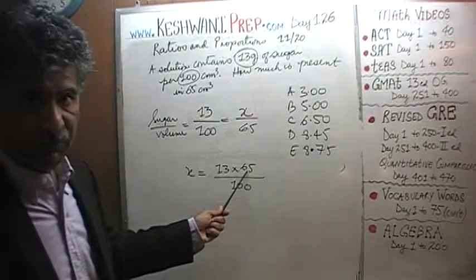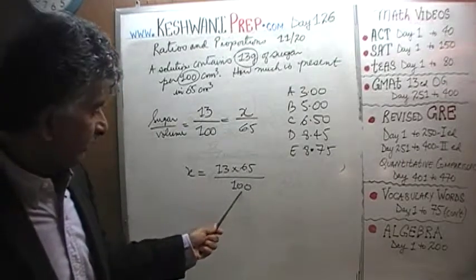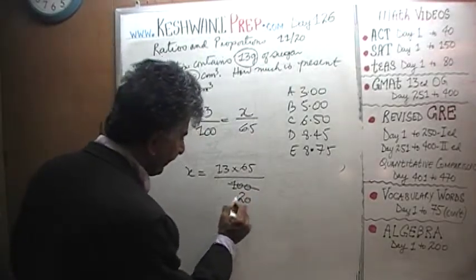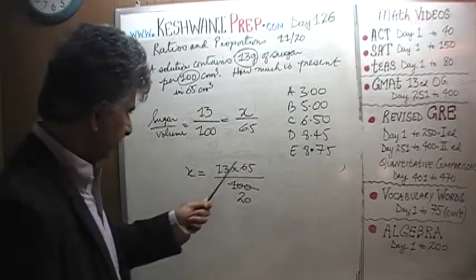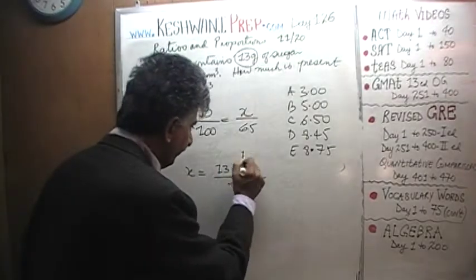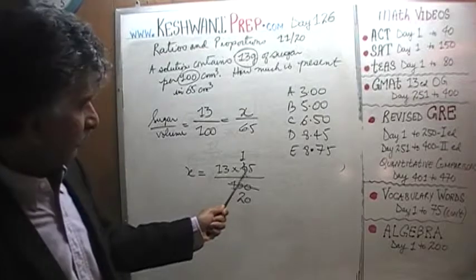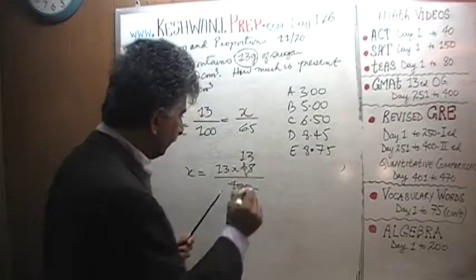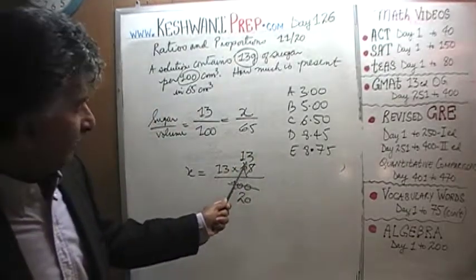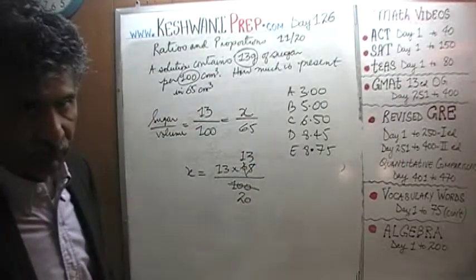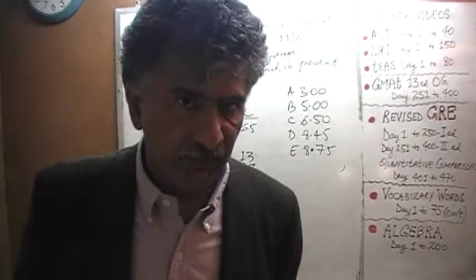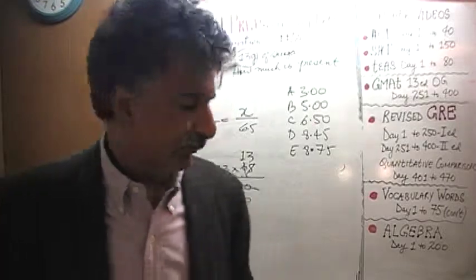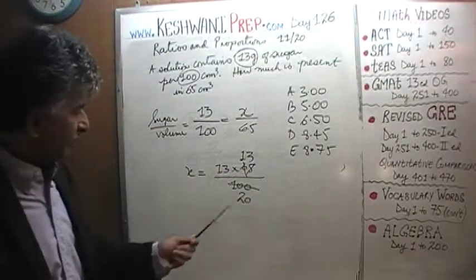And at this point we simply have to simplify it. 13 times 65 over 100. I see 65 which is a multiple of 5, and 100 which is a multiple of 5. Let's divide top and bottom by 5. We divide top and bottom by 5: 100 becomes 20. How many fives in 65? 6 has one five, the remaining one goes and joins the 5, becomes 15, and 15 has 3 fives. So there are 13 fives in 65, which makes perfect sense because 65 is made up of 50 and 15: 50 has 10 fives and 15 has another 3 fives.